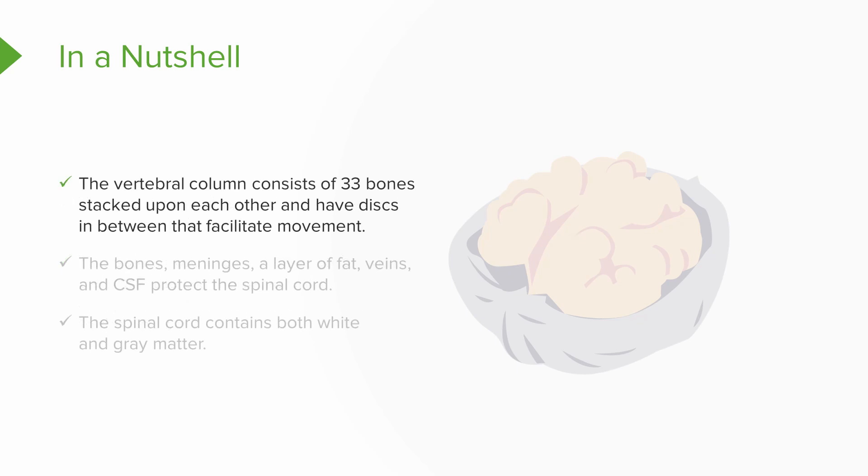The vertebral column consists of 33 bones stacked up on top of each other, and they have discs in between that help facilitate movement.